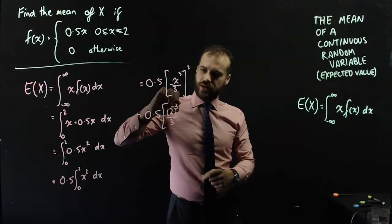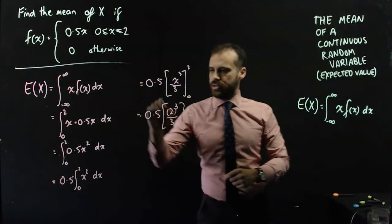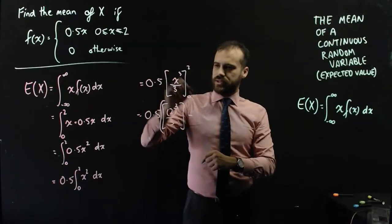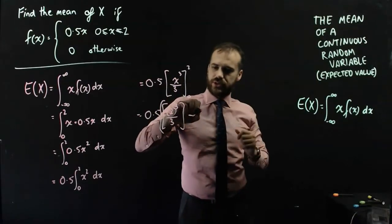So, 2 cubed over 3 minus, but be careful, because we need to have all of it, minus 0 cubed over 3, which is just 0.